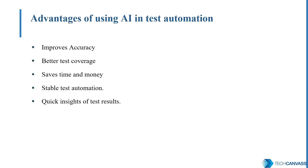Let's conclude by talking about the advantages of using AI in test automation. It helps in improving accuracy, increases test coverage, saves a lot of time and hence money. It makes our test scripts quite stable and gives good insights into test results by providing good correlation between logs and system logs. We can truly say that AI is the third wave in software automation testing.